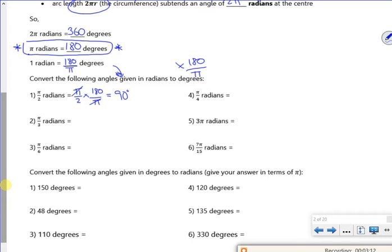If π is 180, π by 3 must be 60. But if you're not happy, you just multiply by 180 over π. If π is 180, π by 4 must be 45. If π is 180, 3π must be 3 lots of 180, which is 540. And then if π is 180, 7π over 15, the π is cancelled, other bits cancel down, and it gives me 84 degrees there.